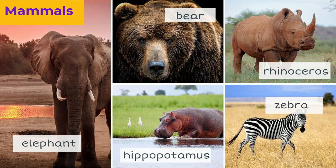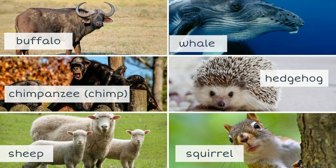Mammals feed their young with milk, and some examples are an elephant, a bear, a rhinoceros, a hippopotamus, a zebra, a buffalo, a chimpanzee — or simply a chimp — a sheep, a whale, a hedgehog, a squirrel.